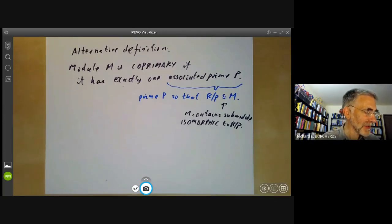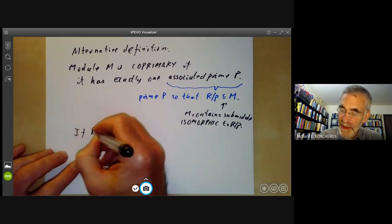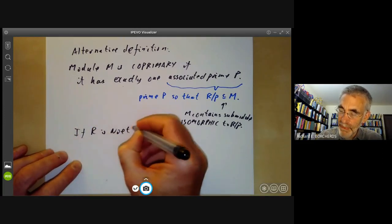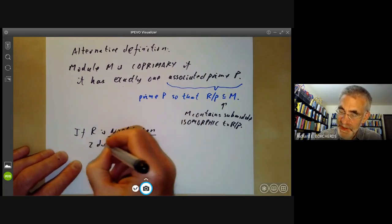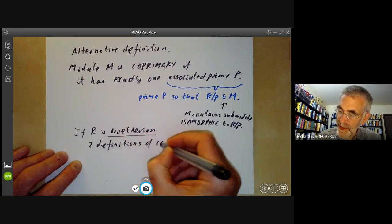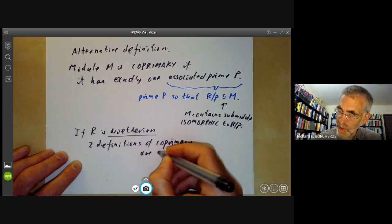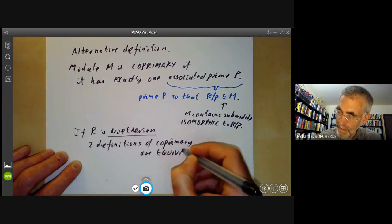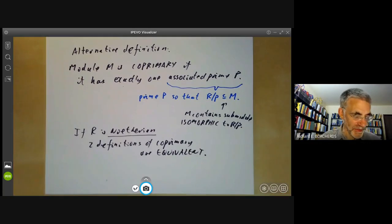So we've got two different definitions. If the ring R is Noetherian, the two definitions of co-primary are equivalent, which I'm not going to bother to prove, but you can find it in any reasonable book on commutative algebra.